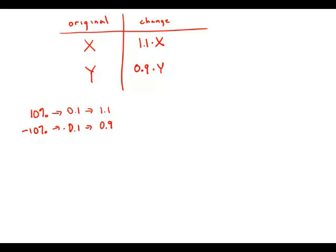So the question asks: the reduced price per share of stock Y — which is 0.9Y — is what percent of the original price of stock X? So we're going to figure that out. That would be 0.9Y divided by X times 100%. The only thing we don't know is the ratio Y over X. If we could figure out Y over X, we could answer the question.